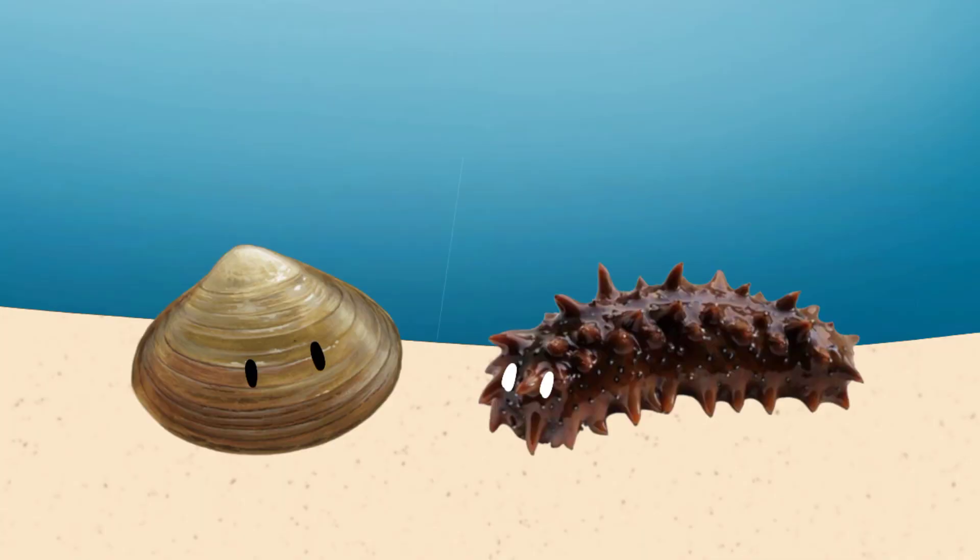Let me start over. There was a sea mollusk and a sea cucumber. They were both, well, they were like friends. No, they didn't know each other, because one's going to ask something that a friend wouldn't know.